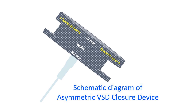Complete AV block is an important risk of device closure of perimembranous ventricular septal defect. This is because of pressure from the device damaging the atrioventricular conduction system, which passes along the posterior border of the VSD. Other possibilities are trauma during the implant procedure leading to local hematoma formation and inflammatory response to the material of the device.